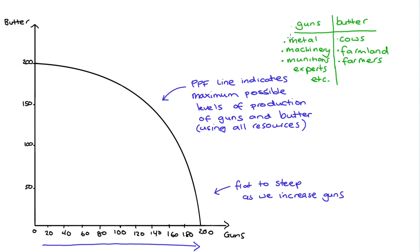And the resources that we use to make guns are much better at making guns than making butter. So if we got a munitions expert to make butter, well, they might struggle plausibly.